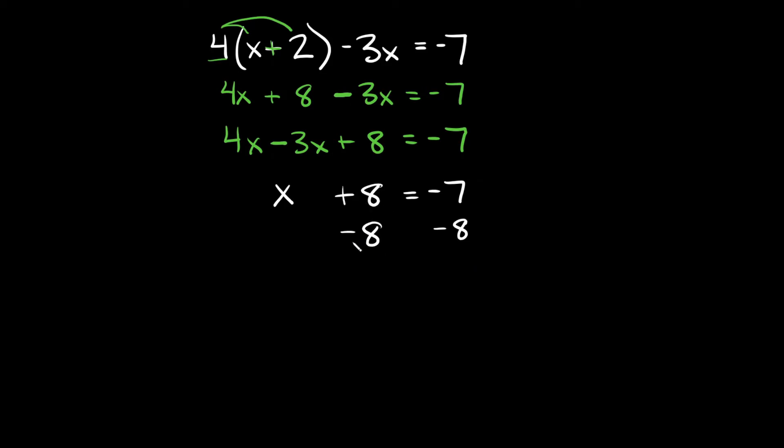So plus eight minus eight these just go to zero. So on this side of the equation all we're going to be left with is x and then that's equal to negative seven minus eight which is equal to negative fifteen. All right so your answer right here would be x is equal to negative fifteen.